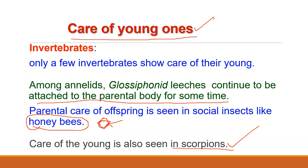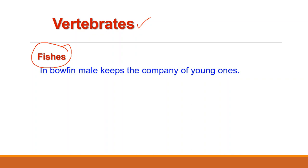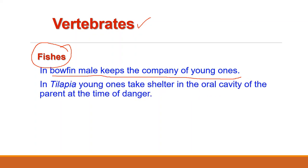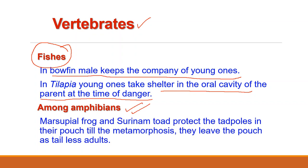As far as vertebrates are concerned, care of young is also present in both cold-blooded and warm-blooded vertebrates. In fishes, the male bowfin Amia calva keeps company of young fishes for some time. In case of mouth-brooding tilapia, young ones take shelter in the oral cavity of the parent at the time of danger. Among amphibians, the marsupial frog Gastrotheca and Suriname toad Pipa pipa protect not only the eggs in the skin pouches but also the tadpoles that complete metamorphosis there and leave the pouches only as tailless adults.